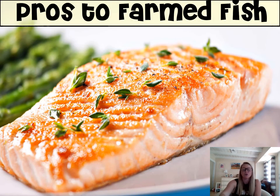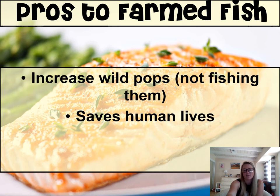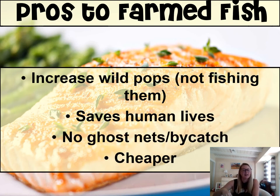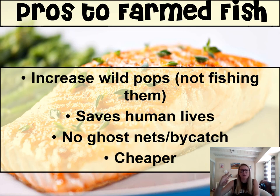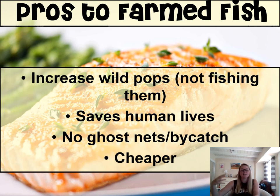There are many advantages to farming fish. First, wild populations are able to increase because we're not out there taking fish, so they're allowed to reproduce and grow. Second, it saves human lives — anyone who has seen Deadliest Catch knows how dangerous open-ocean fishing can be. Third, there are no ghost nets and no bycatch — what you're farming is what you're going to get. Lastly, it tends to be cheaper because you avoid much of the maintenance, transportation, and human safety issues.